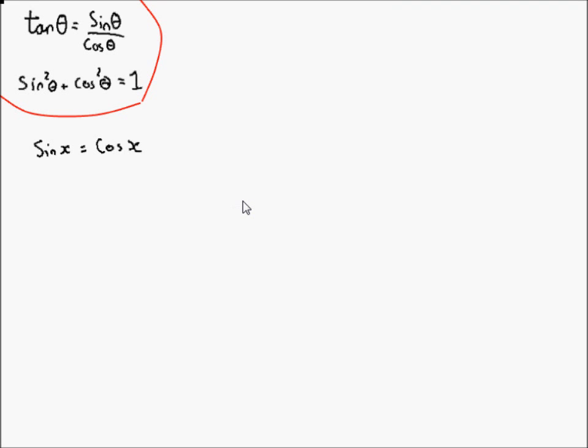Hello and welcome to this short introduction into how to use trigonometric identities to rearrange equations to get them in the form of one trig function. Firstly, we have tan θ equals sin θ over cos θ, and sin squared θ plus cos squared θ equals 1.